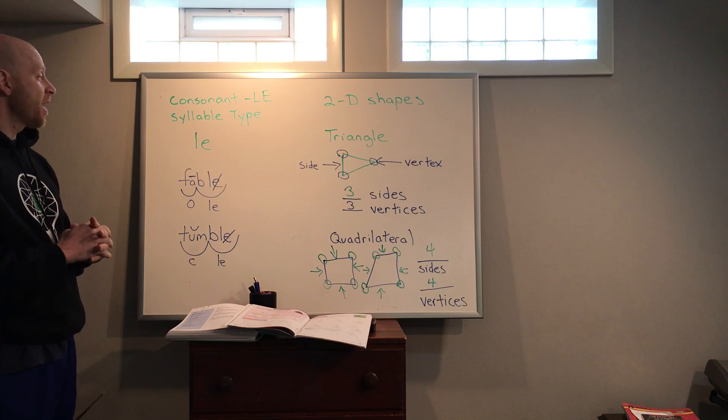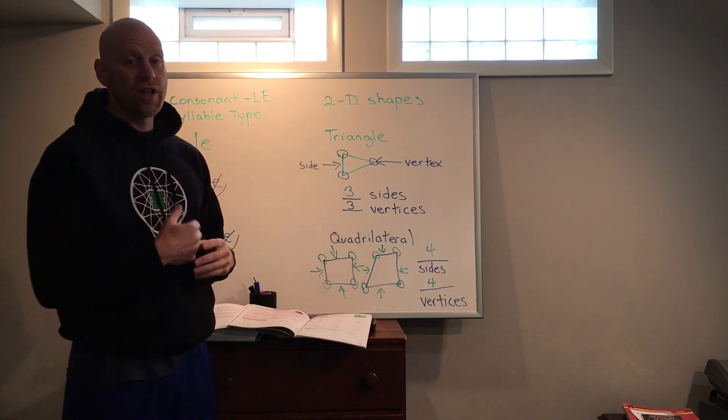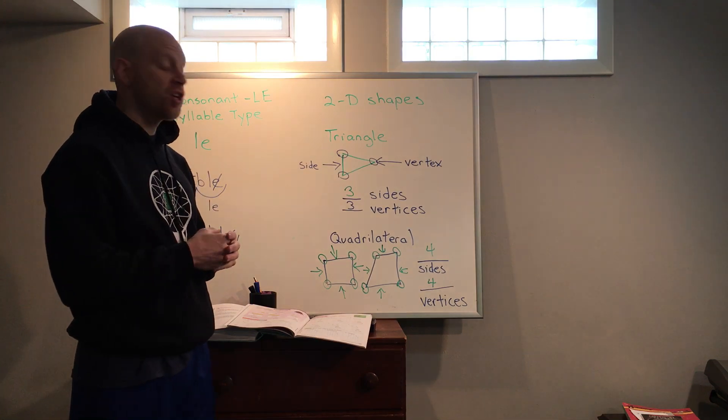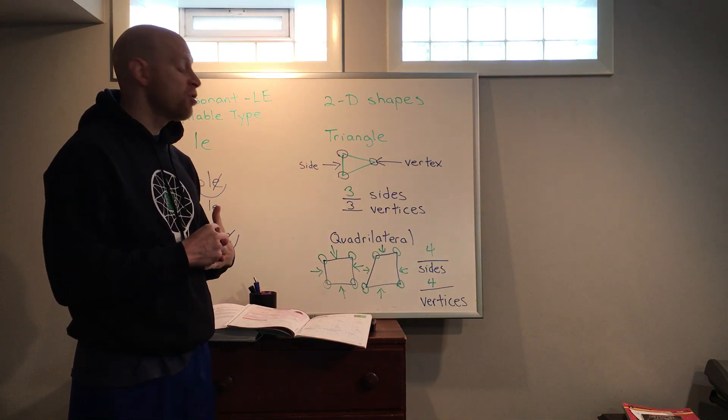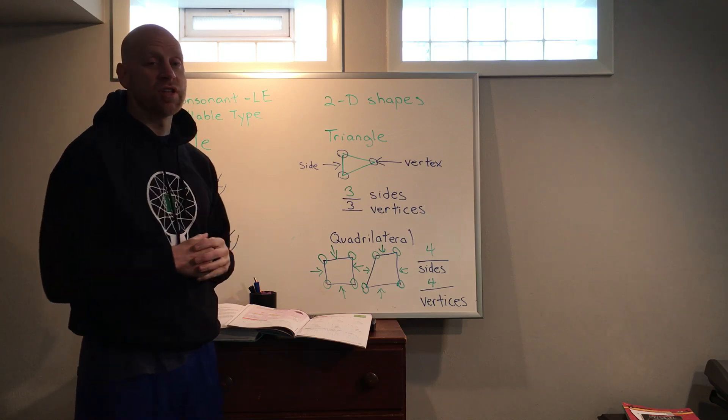So think about some more words that have the consonant LE at home. Think if you can come up with a couple of them. If you want to Google them, feel free to do that as well. And then go around your house and see if you can find some or even draw some flat shapes that you know the names of. Definitely triangles, definitely quadrilaterals. Think about those. There's more, we're going to hit more of those tomorrow.